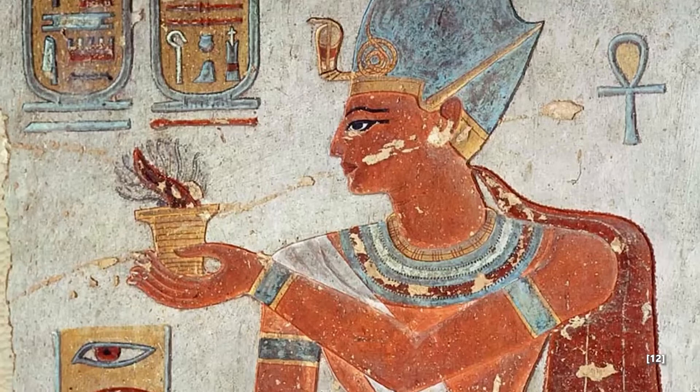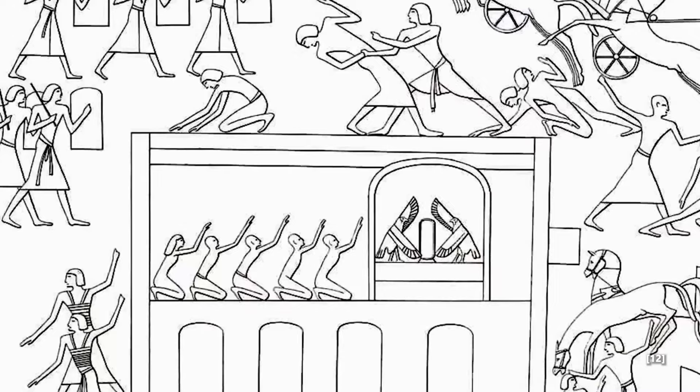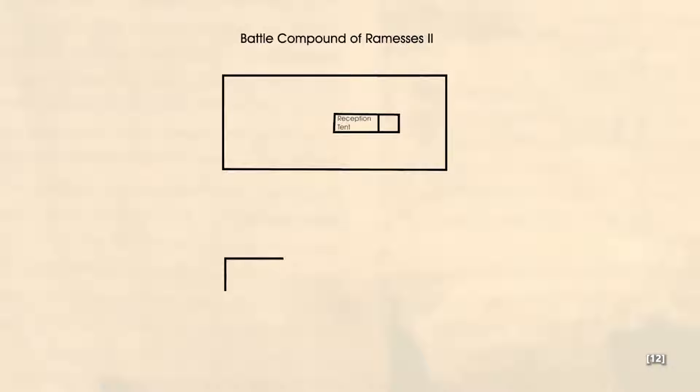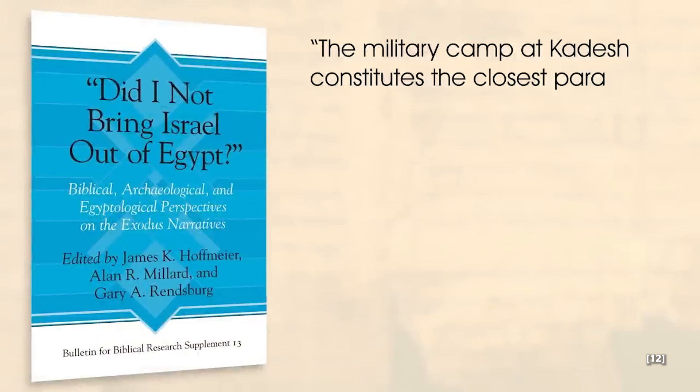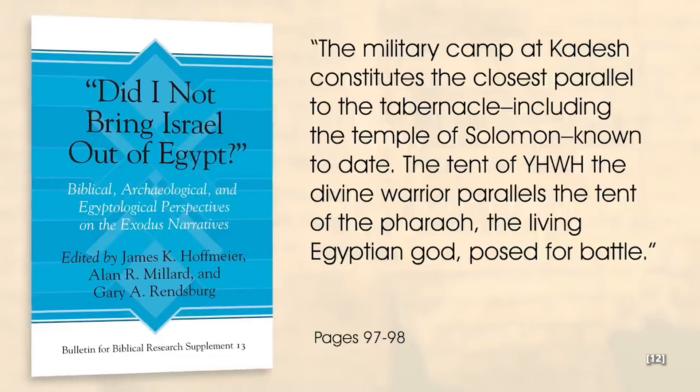Even the encampment of Israel fits with a Ramesside time period. Ramesses' military camps were set up in a rectangular fashion with an entrance in the middle of the eastern wall. The pharaoh resided in the middle with a reception tent, and his throne was symbolized with two falcons facing each other with their wings spread out. The book of Numbers states Israel encamped in a similar fashion, with the ark in the center which had two-winged cherubs on it. Joshua Berman says the military camp at Kadesh constitutes the closest parallel to the tabernacle, including the Temple of Solomon, known to date. The tent of Yahweh, the divine warrior, parallels the tent of the pharaoh, the living Egyptian god posed for battle.